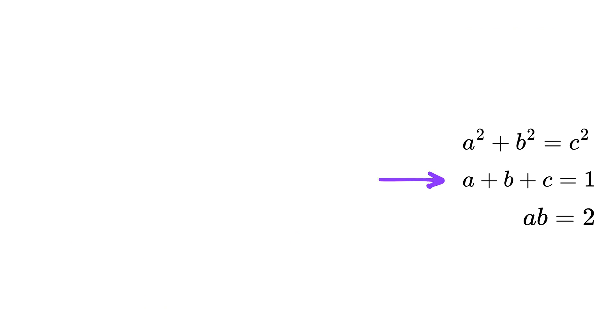From this equation, we get C equals 1 minus A minus B. Now we substitute this into the Pythagoras equation. We get A squared plus B squared equals 1 minus A minus B whole squared.